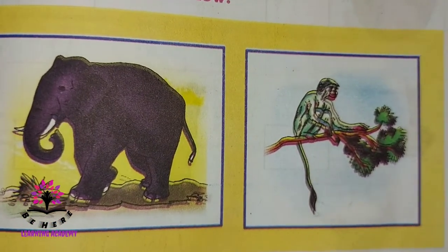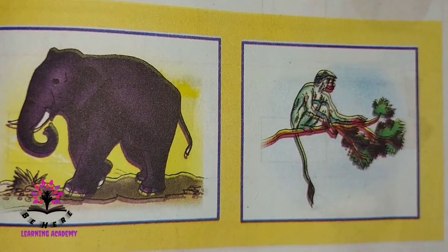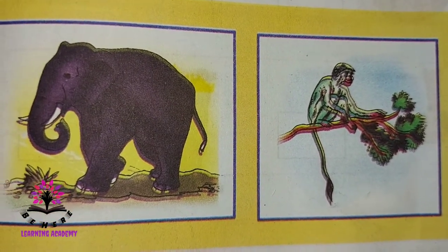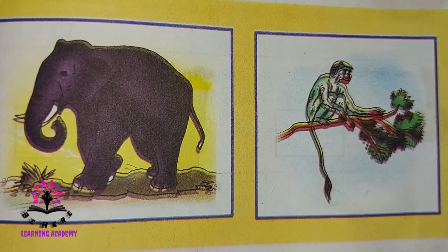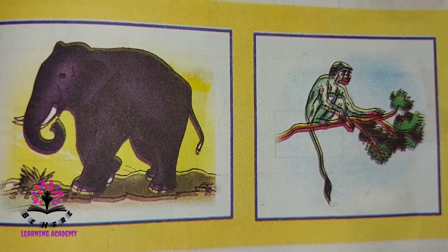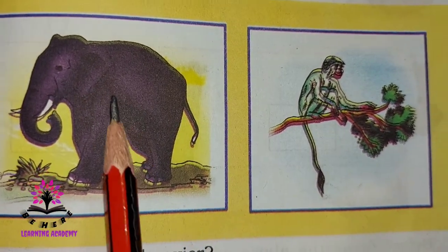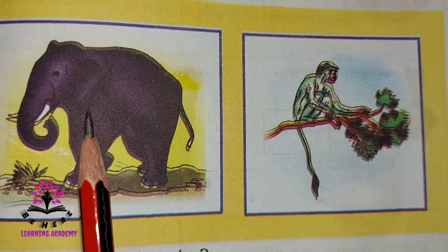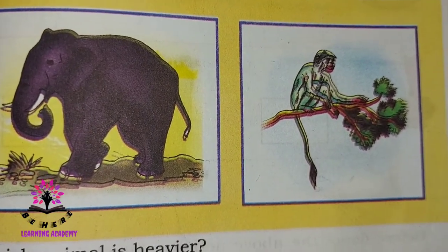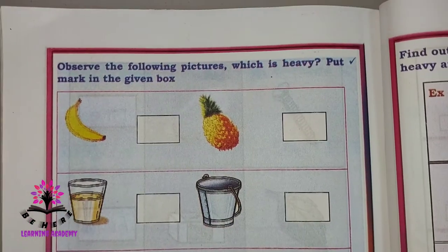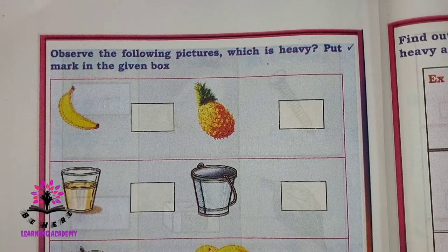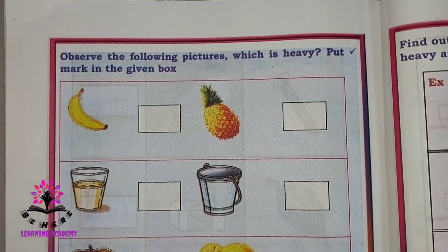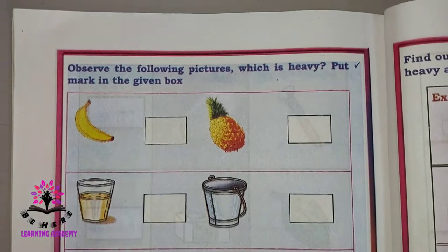Look at these pictures. You find a monkey and an elephant — which animal is heavier here? Among the elephant and the monkey, the elephant is heavier. Observe the following pictures and identify which is heavier, then put a mark in the given box.